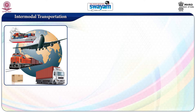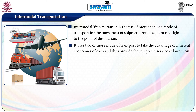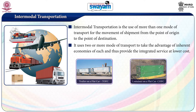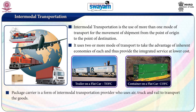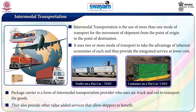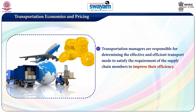Intermodal transportation is the use of more than one mode of transport for the movement of a shipment from the point of origin to the point of destination. It uses two or more modes of transportation to take advantage of the inherent economies of each, and thus provides integrated service at lower cost. The most widely used intermodal systems are the Trailer on Flat Car (TOFC) and the Container on Flat Car (COFC). Package carrier is a form of intermodal transportation provider who uses air, truck, and rail to transport goods.